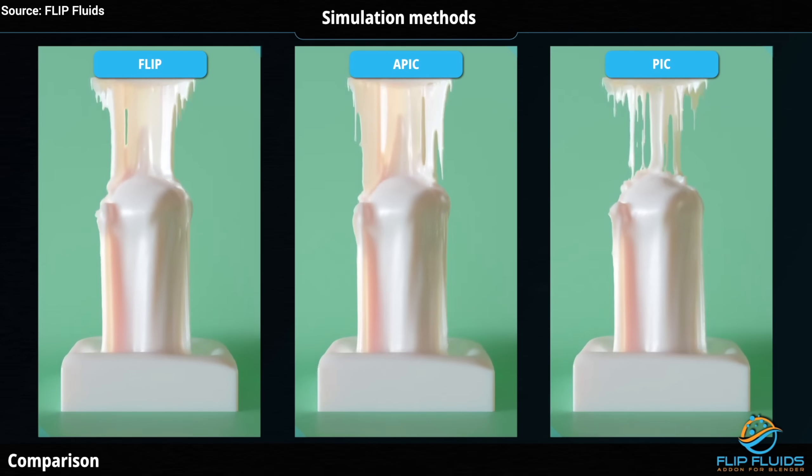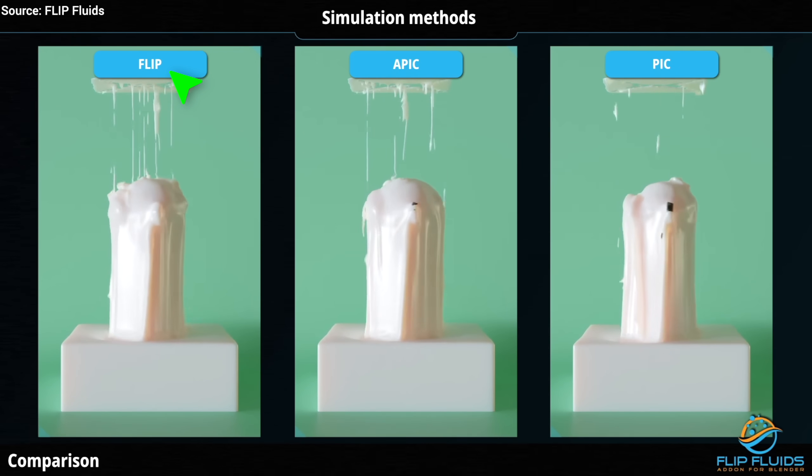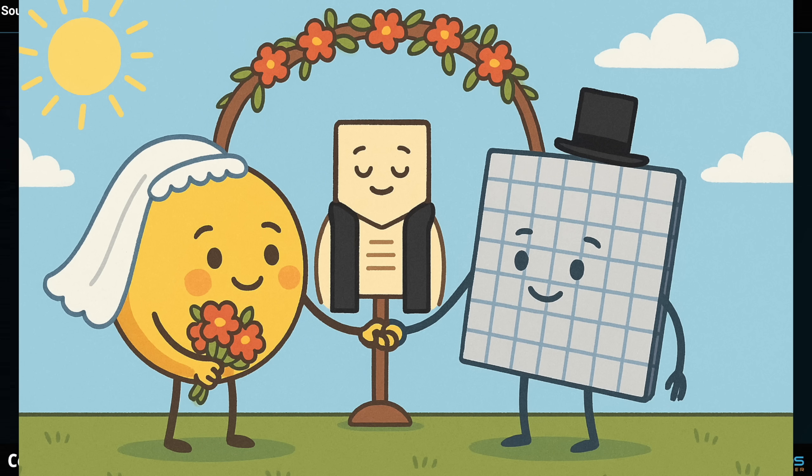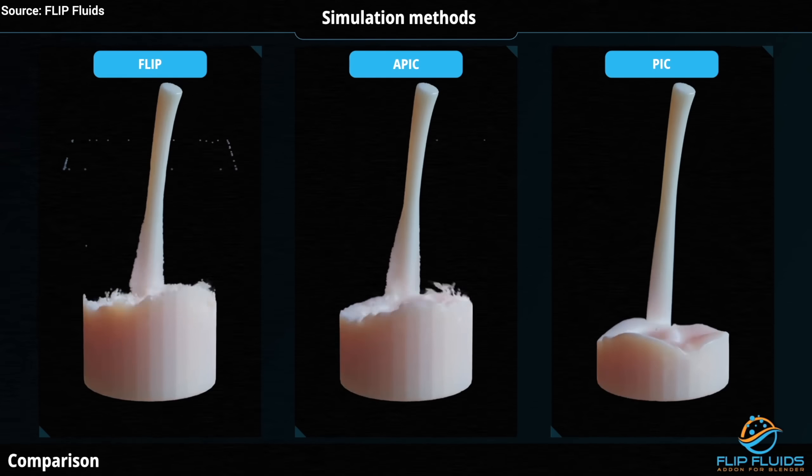And the city hall technique is called FLIP, fluid implicit particle. And it is a hybrid method, a marriage of particles and grids. Okay, so what is the problem? Why do we need this new technique?